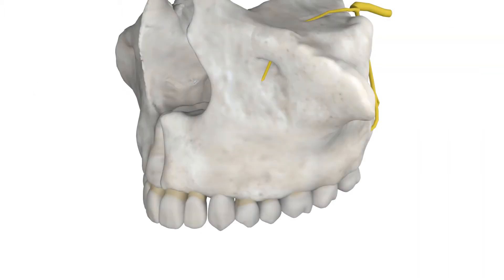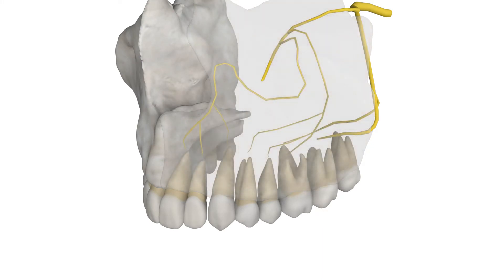This procedure provides anesthesia for individual teeth. The maxillary teeth are innervated by the anterior, middle, and posterior superior alveolar nerves, as shown here. The anesthetic diffuses across the alveolar bone, numbing the nerve root of the individual tooth.